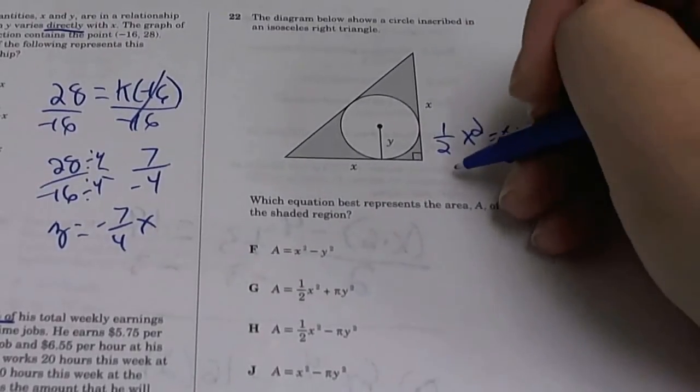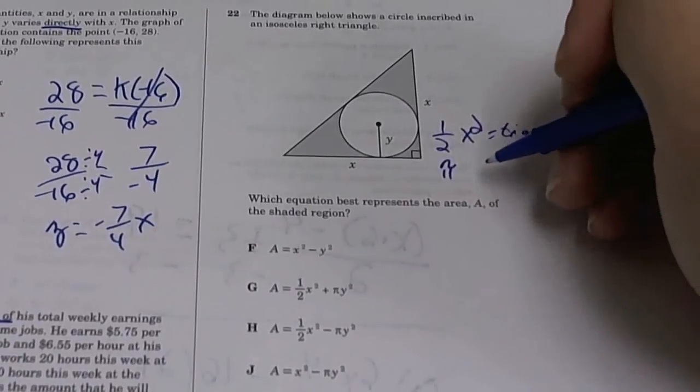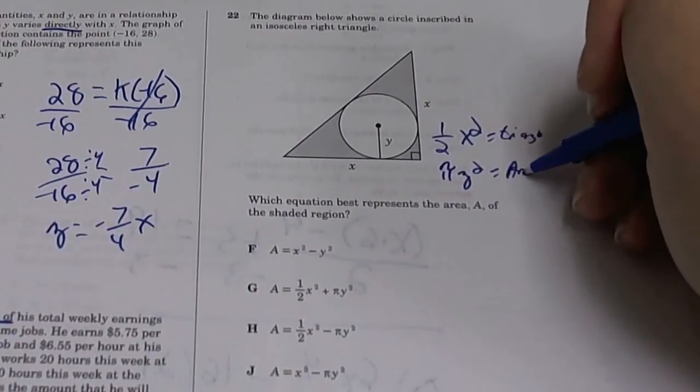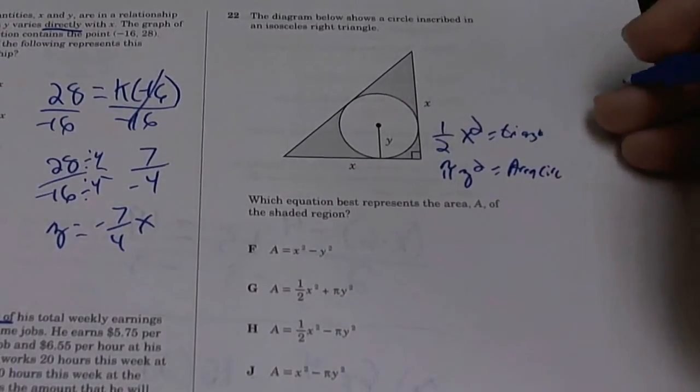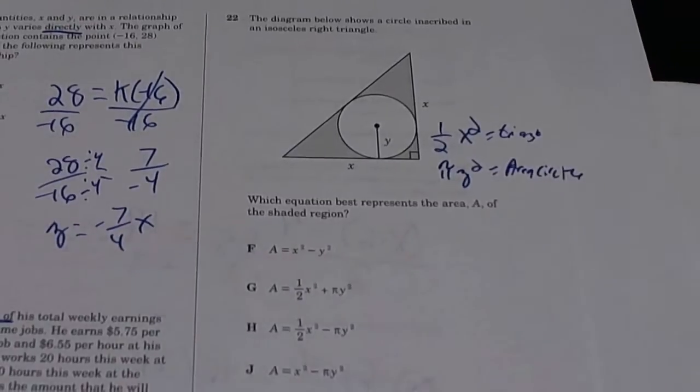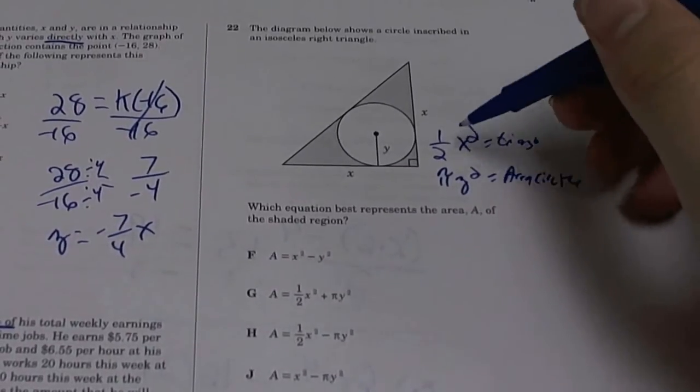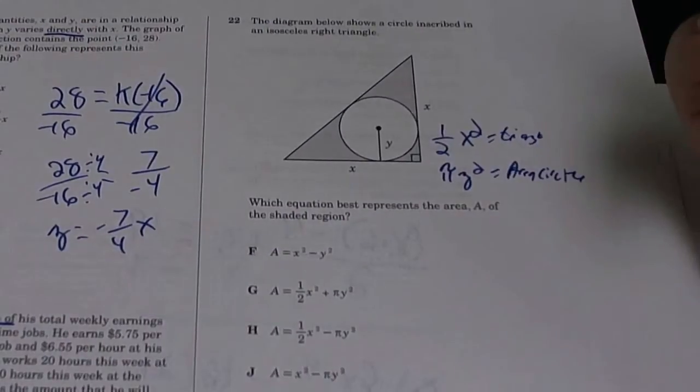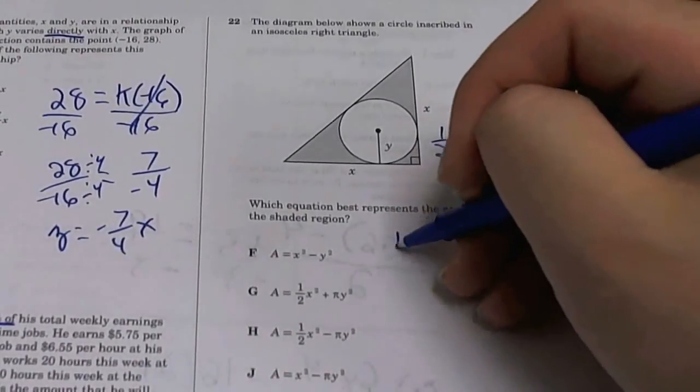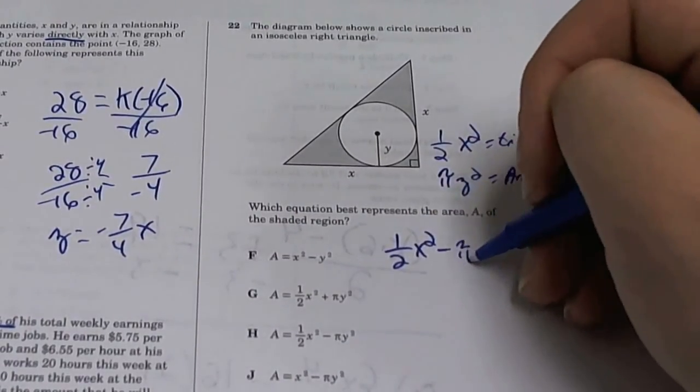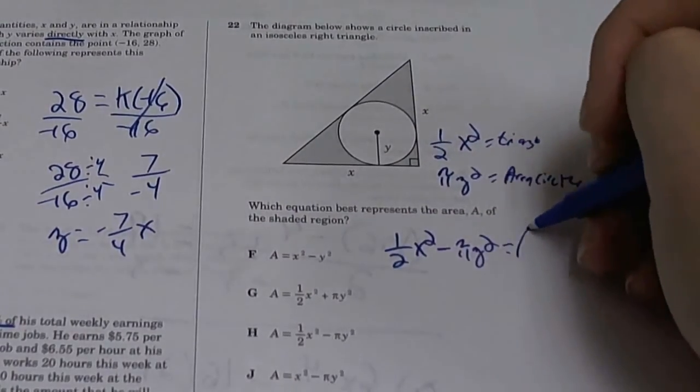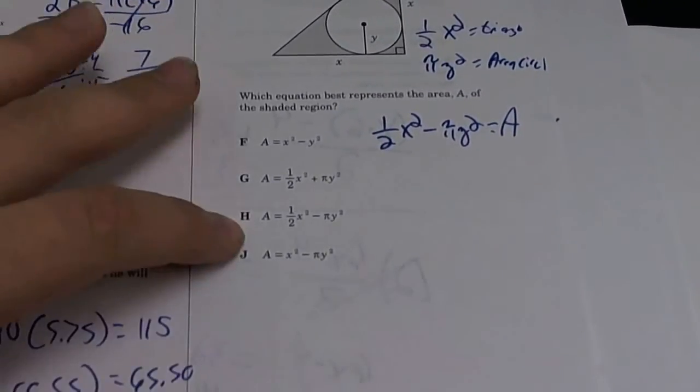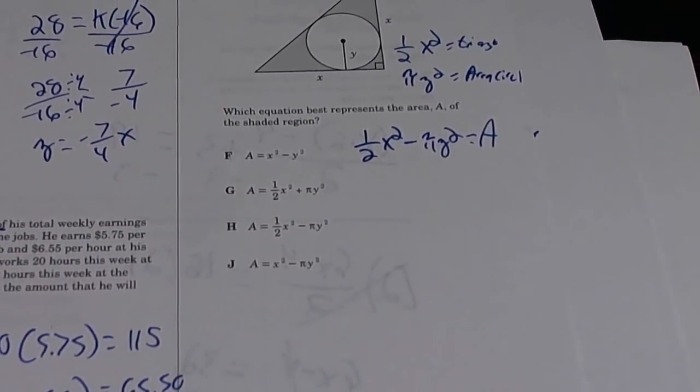And what's the area of the circle? It's pi R squared. In this case, R is Y, so pi Y squared. So you get area of circle. Now 1/2 X squared gives us the whole thing, but we took out this whole piece, so you're going to subtract. So we have 1/2 X squared minus pi Y squared. Now which one of these has that? And it's H. 22 is H.